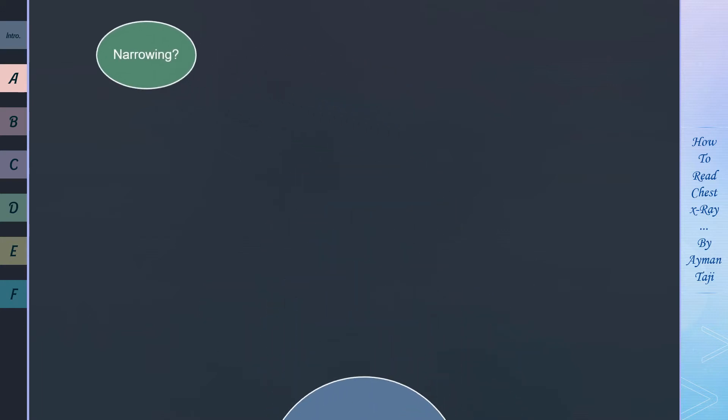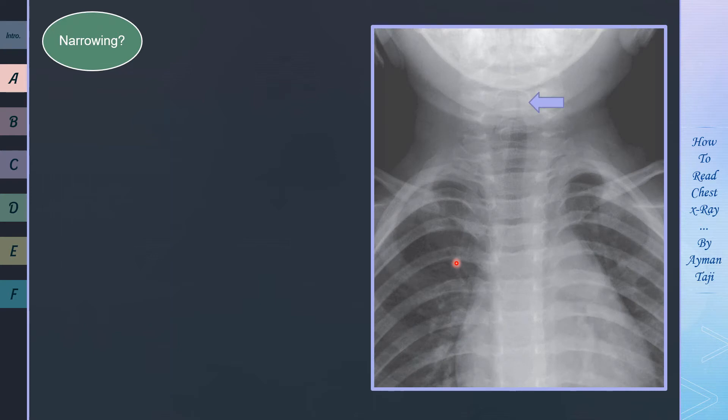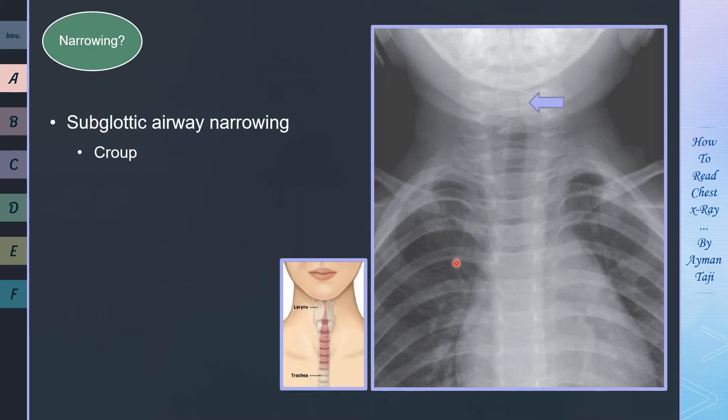Let's take each point in detail and we'll start with airway narrowing. The most important case is narrowing of the lower part of the larynx, known as subglottic airway narrowing. This radiographic finding can be seen in croup, which is one of the most common infectious pediatric emergencies, usually caused by a virus and leads to swelling inside the larynx and trachea which interferes with normal breathing and produces the classic symptoms of barking cough and respiratory stridor.